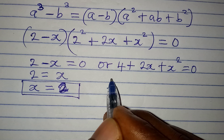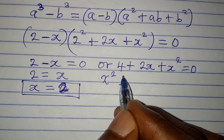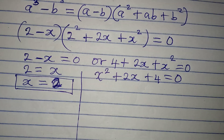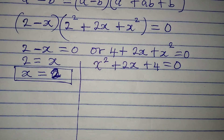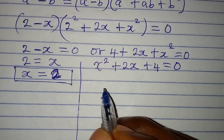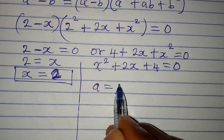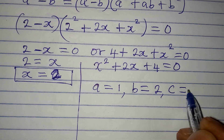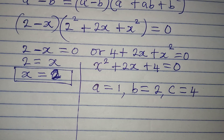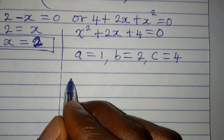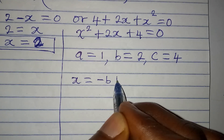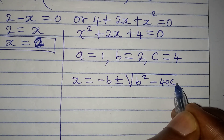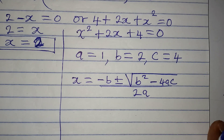Now for the quadratic, we rearrange to x squared plus 2x plus 4 equals 0. We solve using the quadratic formula: a is the coefficient of x squared, which is 1; b is the coefficient of x, which is 2; and c is the constant, which is 4.